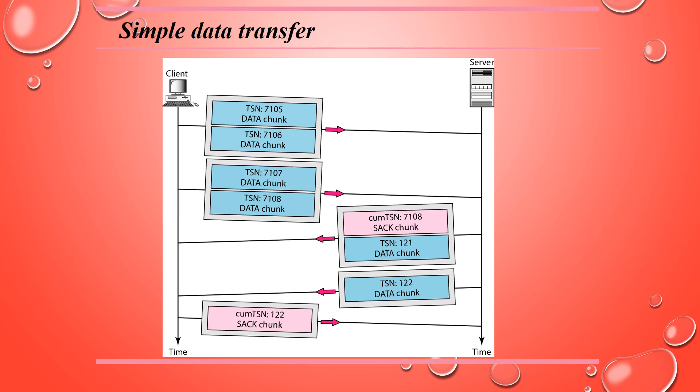SCTP preserves the boundaries of messages from process to process when creating data chunks, as long as the message size does not exceed the MTU of the path. The size of an IP datagram carrying a message is determined by adding the message size to four overheads: the data chunk header, necessary SACK chunk, SCTP general header, and IP header. If the total size exceeds the MTU, the message needs to be fragmented.